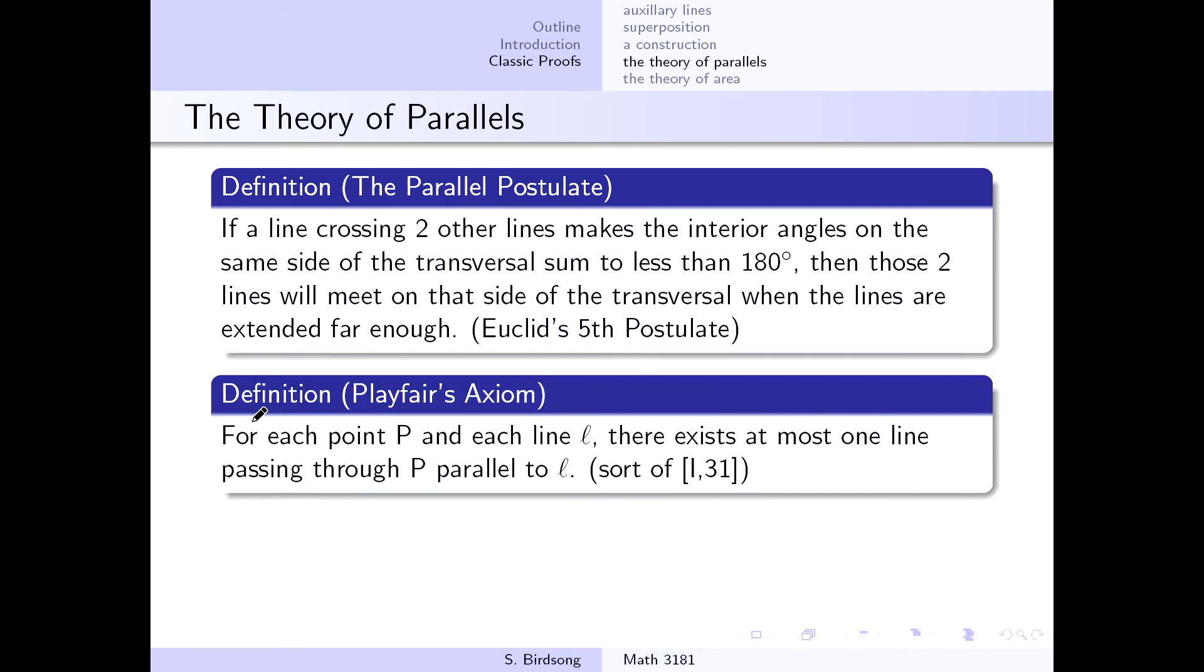So what Playfair's axiom says is for each point P in your geometry and each line L, there exists at most one line that passes through P parallel to L. The construction actually gives you what that line is.